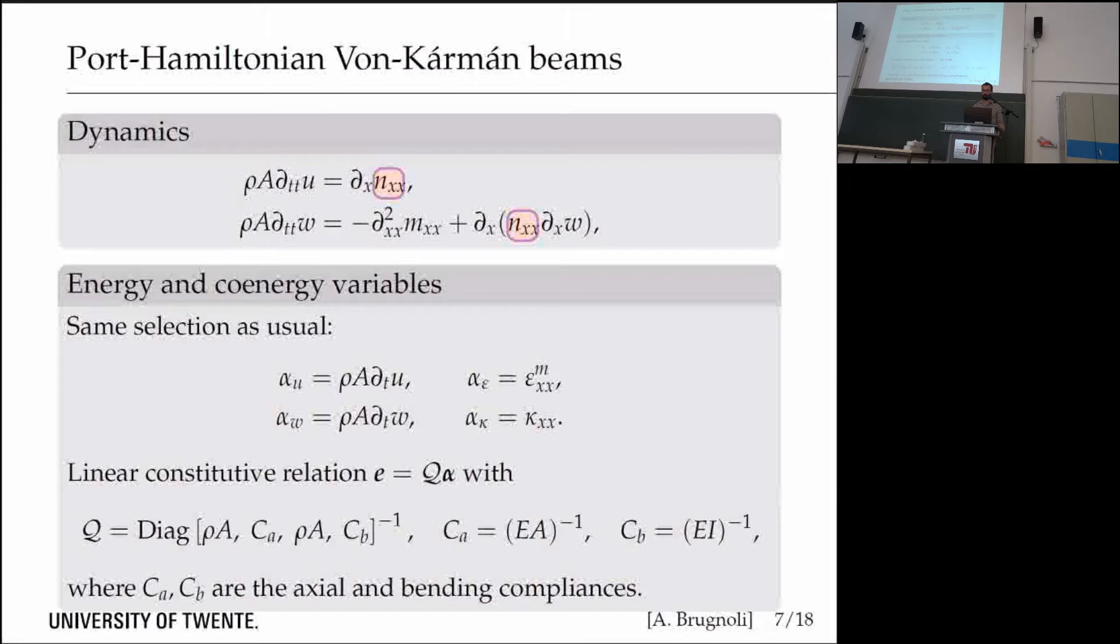You can derive this model in Port-Hamiltonian fashion if you select the same energy variables as commonly done in the linear case. You select the linear momentum, both axial and vertical, and the deformations, both the membrane deformation and the bending deformation.